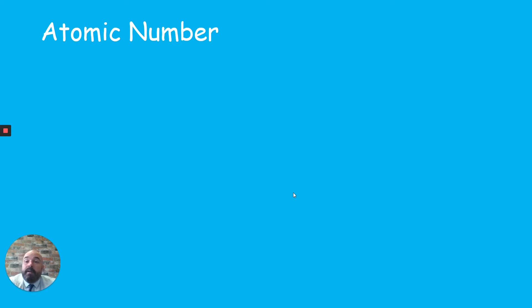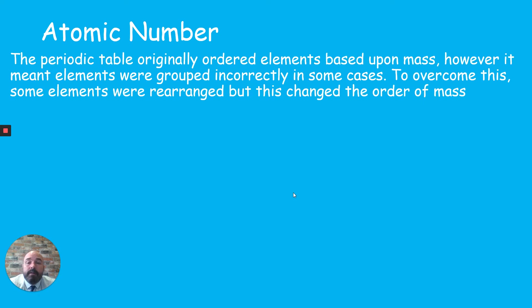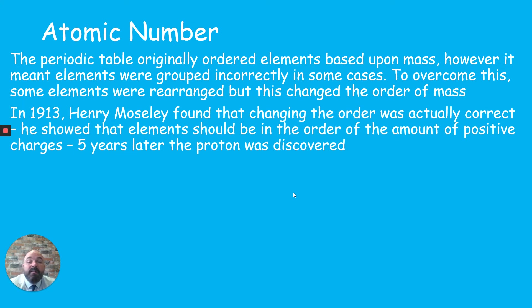Looking at the numbers on periodic table tiles — the atomic number is the bottom number and acts as an identifier, telling you what an element is. Originally, Mendeleev ordered elements by atomic weight, but some elements were grouped incorrectly. It wasn't until 1913 that Henry Moseley proved that ordering by the amount of positive charges was correct — five years before the proton was discovered — vindicating Mendeleev's pair reversals.